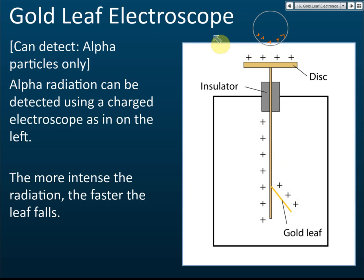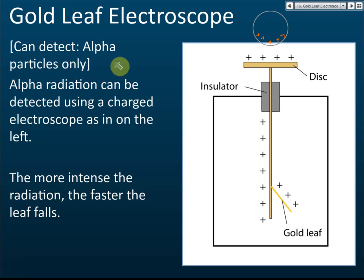The gold leaf electroscope can also be used to detect radioactive emissions, but it is limited to alpha particles only. It cannot detect beta or gamma radiation because their ionizing power is too low.